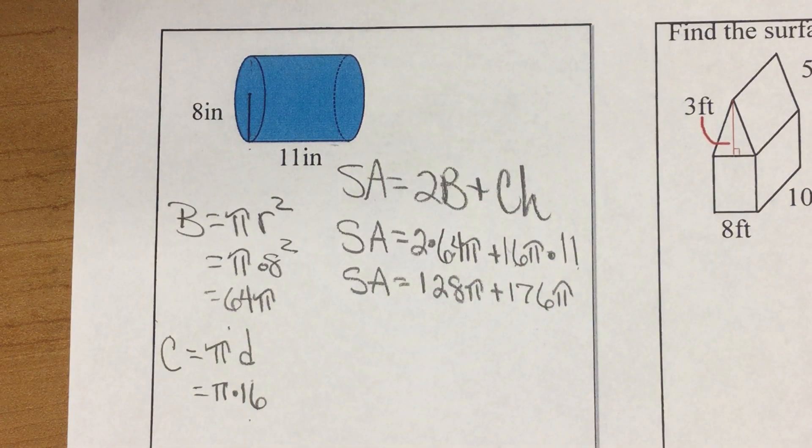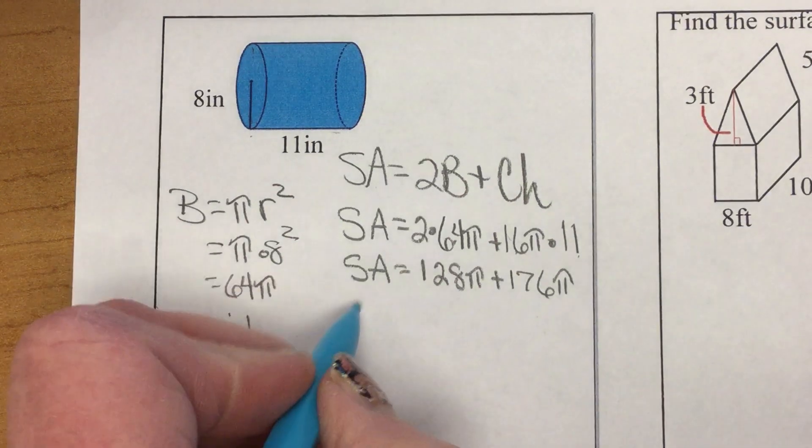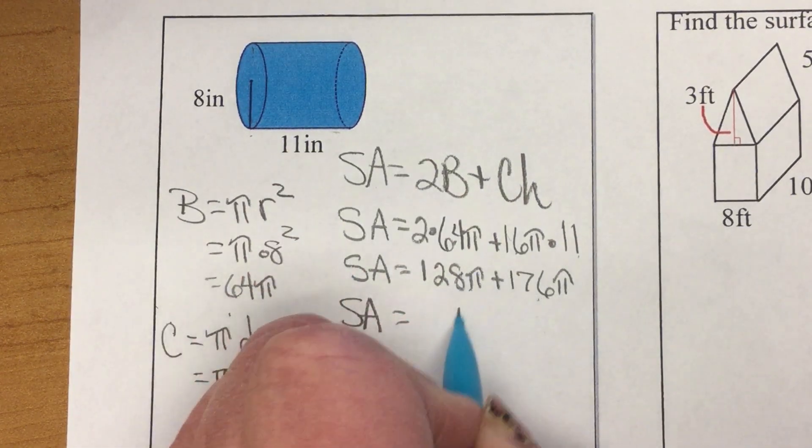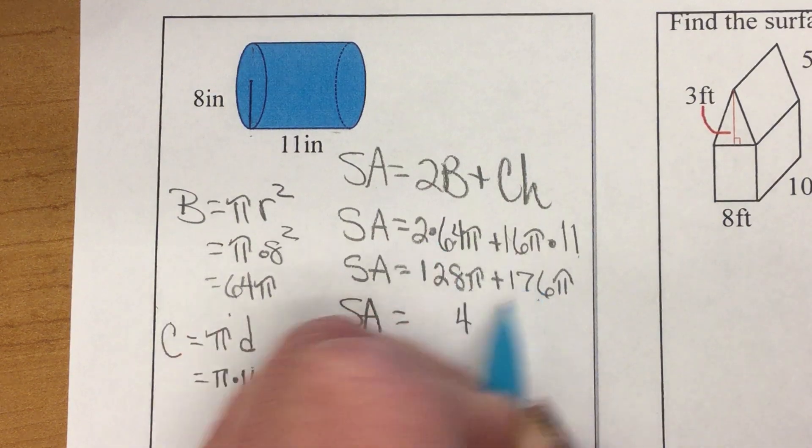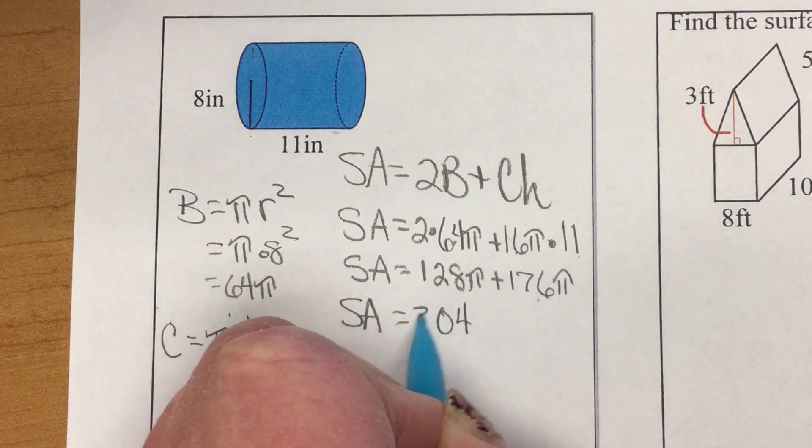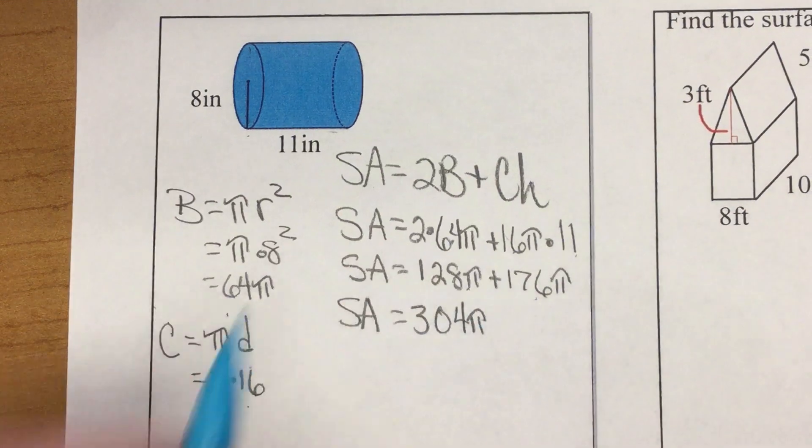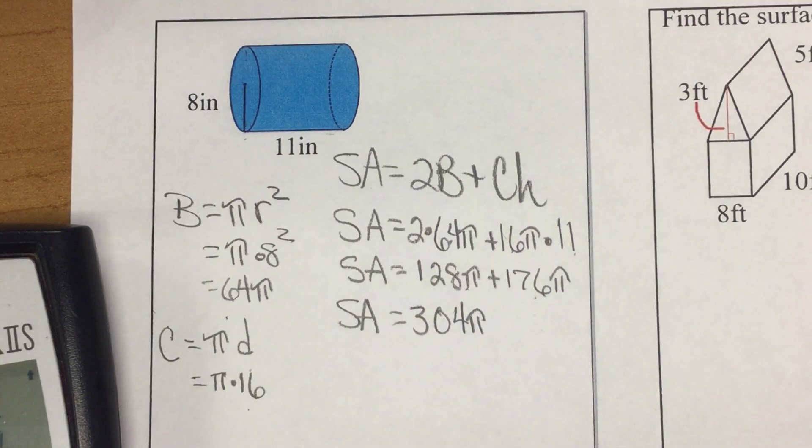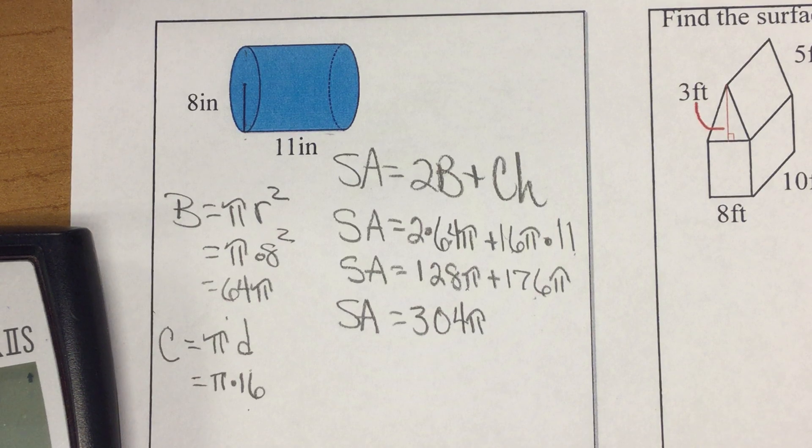176 pi. Now, we're going to add those together and get 304 pi. And now, all I have to do is multiply that with 1 on my calculator, 304 pi.